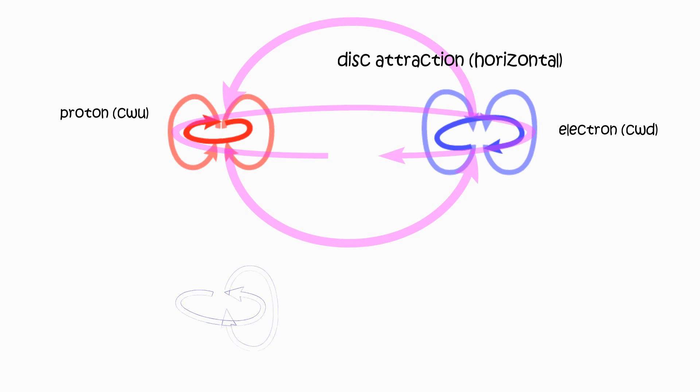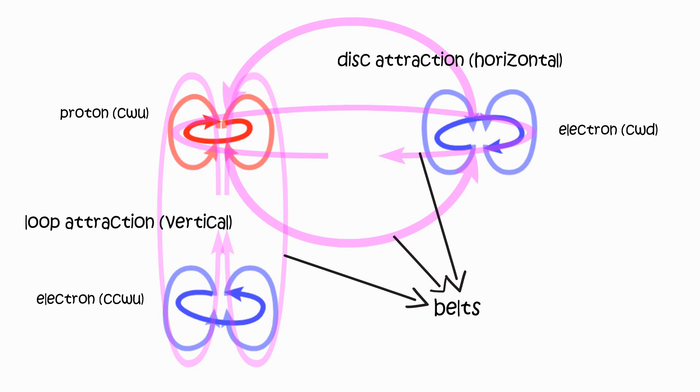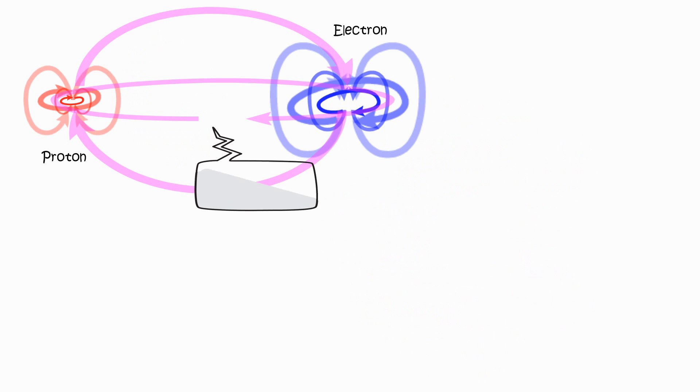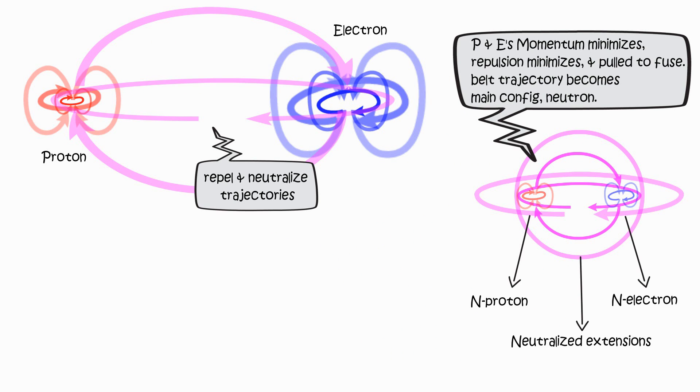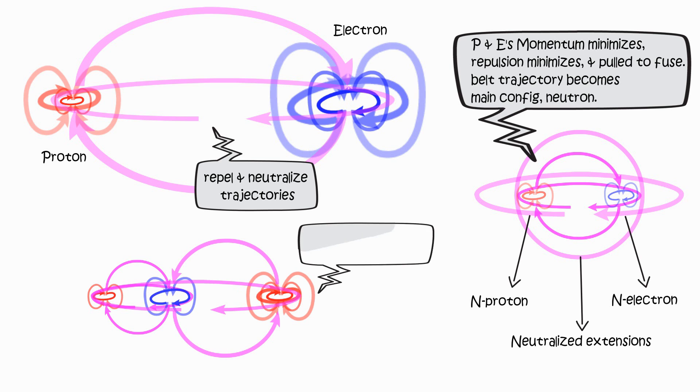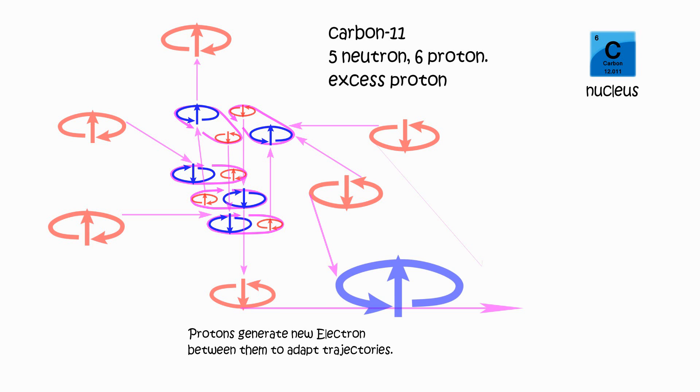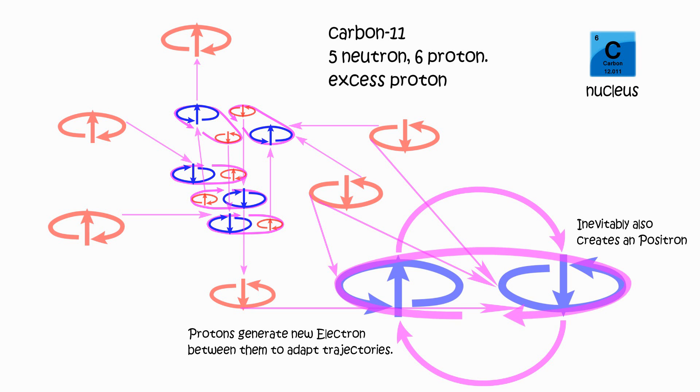From one fundamental force to four attributes. Electromagnetic force is interaction with synchronized momentum. Gravitational force is interaction with unsynchronized momentum. Strong force is repelling momentum trajectories bent into binding trajectories. Excess protons in the nucleus may jointly generate an electron between them as a trajectory adapter, subsequently fuels to become a neutron. This is the weak force.